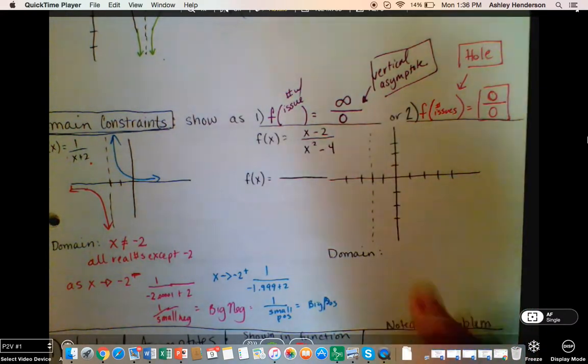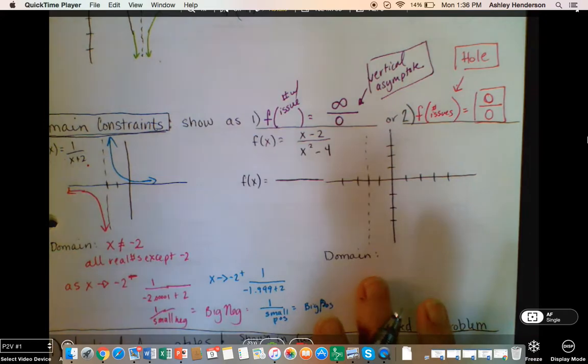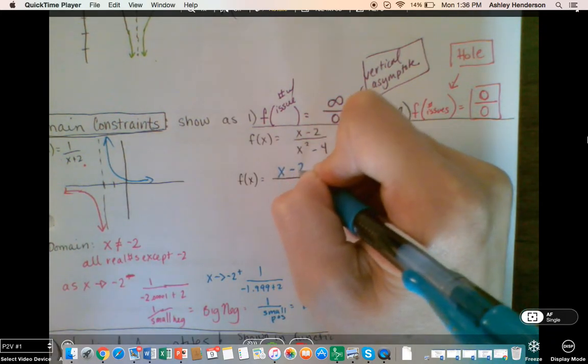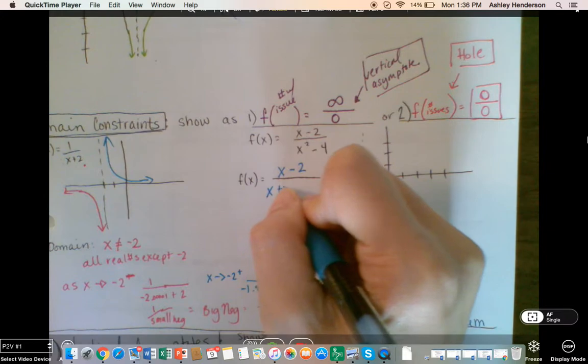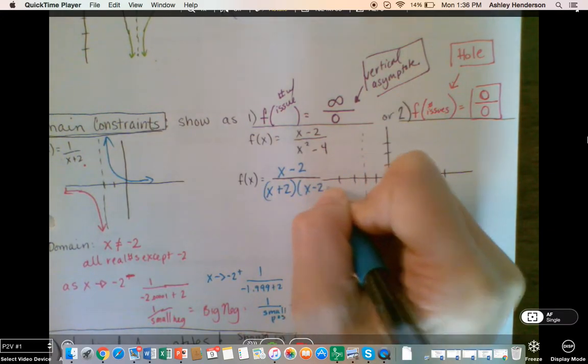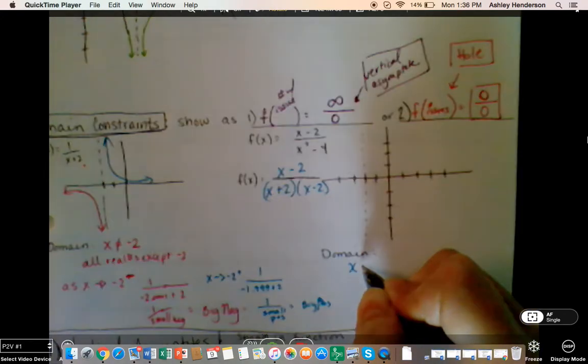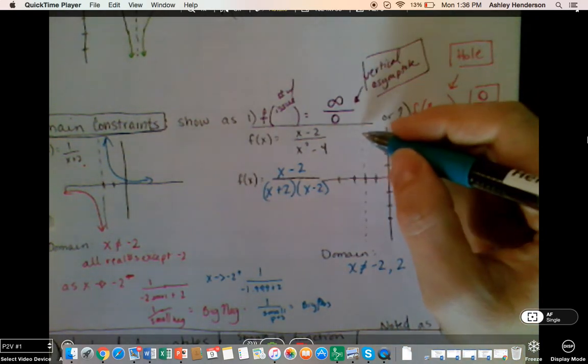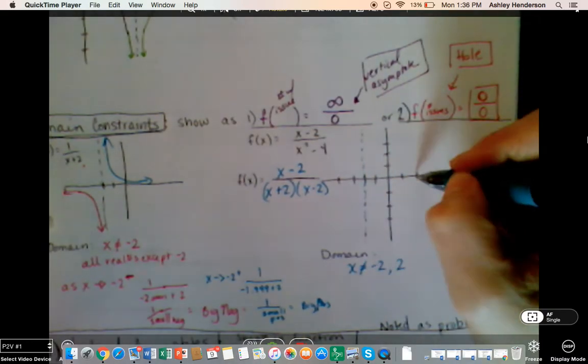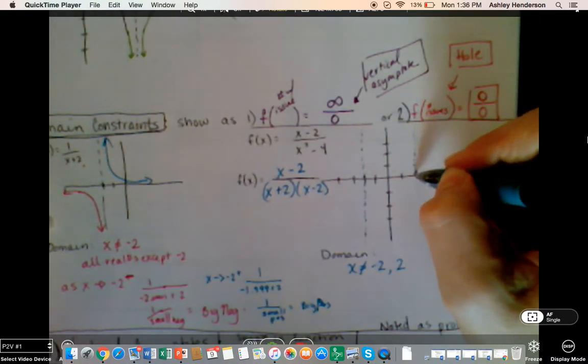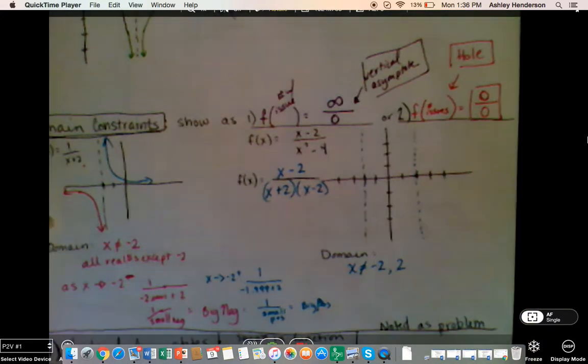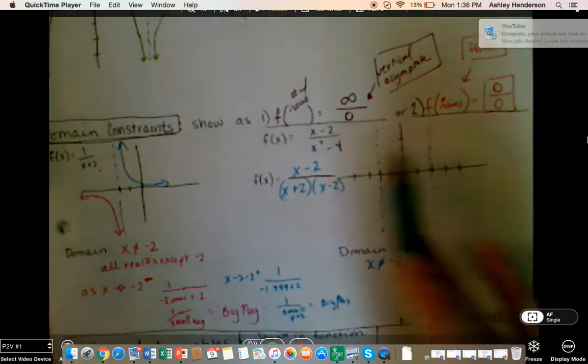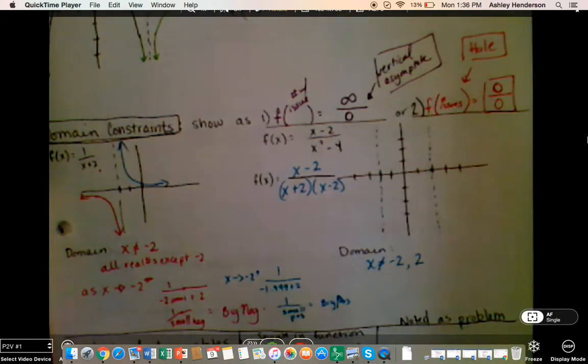Okay, what are our domain restrictions here? Well, before I can make any decisions about what my domain restrictions are here, where I have a denominator that's a difference of perfect squares, which means we can rewrite it, x minus 2 over x plus 2 times x minus 2. So my domain is that x can be anything except negative 2 or positive 2. So somewhere along this line negative 2, we're going to have a domain issue, and somewhere along this line positive 2, we're going to have a domain issue.